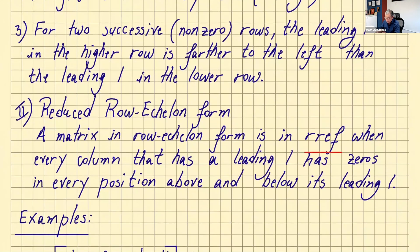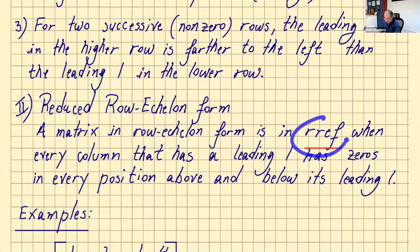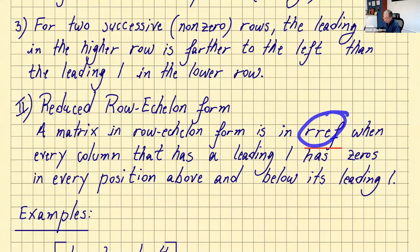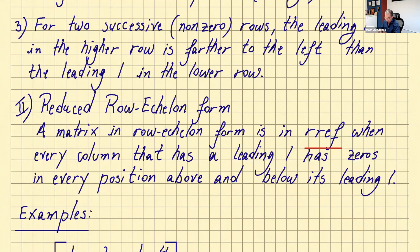Now, what is reduced row echelon form — or RREF? A matrix is in RREF when it is first in row echelon form, and additionally every column that contains a leading one has zeros in every position above and below that leading one. Let's go over some examples to understand this better.